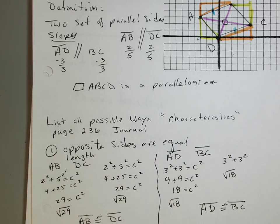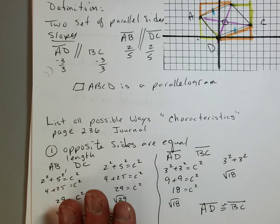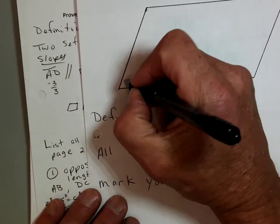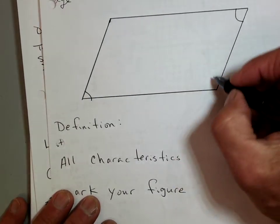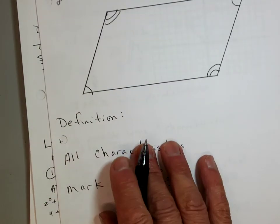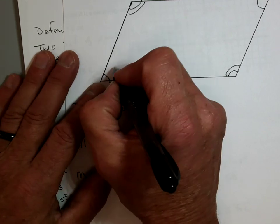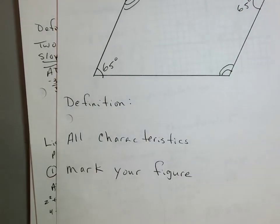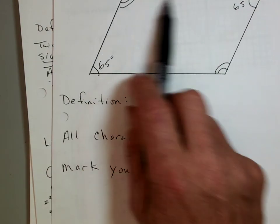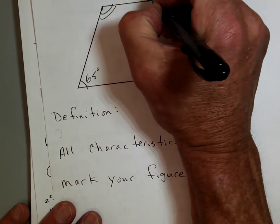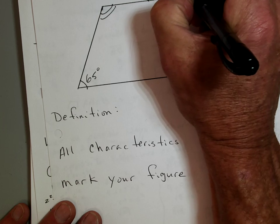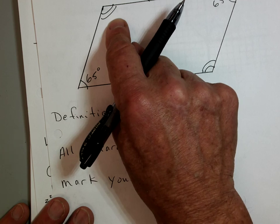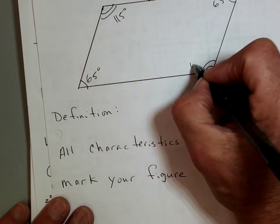We also know that opposite angles are equal. So if this angle is 65 degrees, I know the opposite angle is also 65 degrees. You also know that adjacent angles are supplementary, so that angle would be 115 degrees.